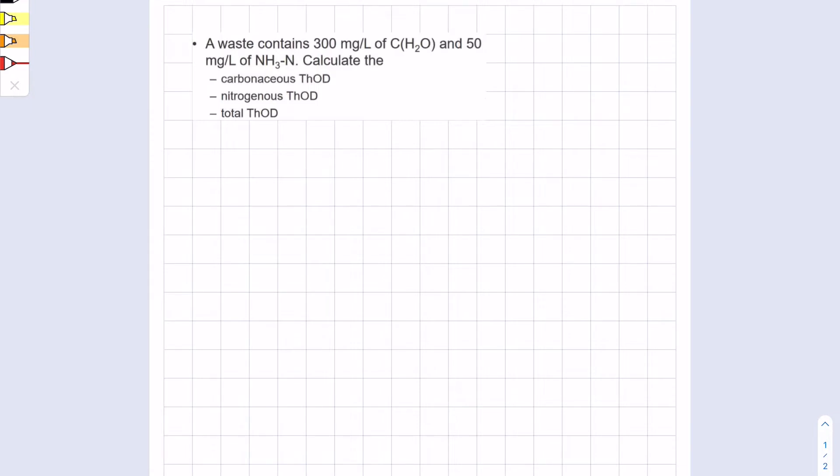Hey guys, I have a theoretical oxygen demand question here for you. It's pretty short, so let's get started. A waste contains 300 milligrams per liter of CH2O and 50 milligrams per liter of NH3-N. Calculate the carbonaceous ThOD, nitrogenous ThOD, and total ThOD.